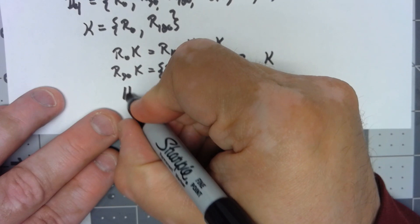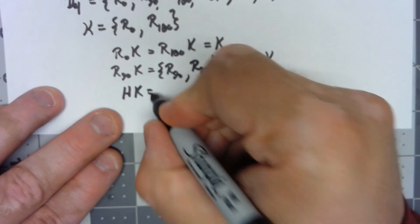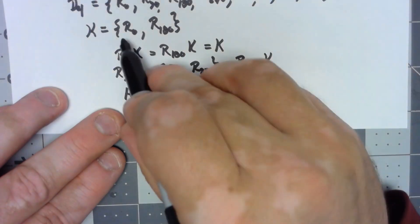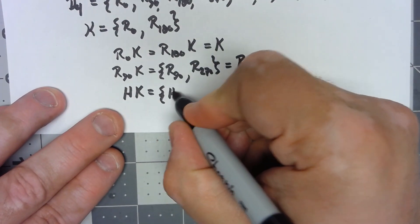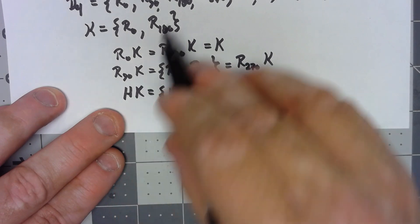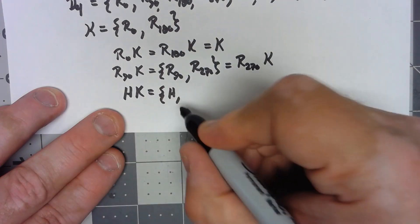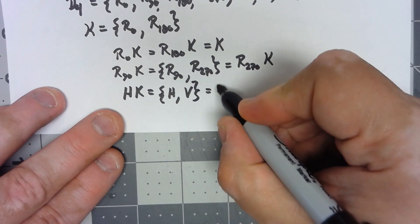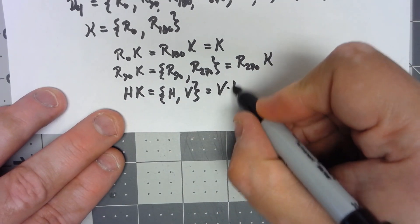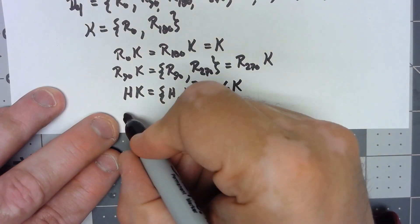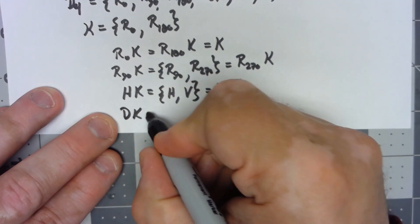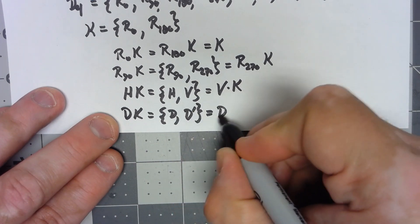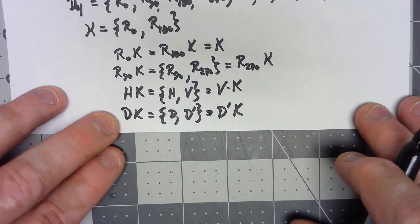If I look at HK, it's a little bit tougher, but H times R0 gives us H, and H times R180 gives us V. And that's going to be the same thing as V times K. D times K is going to give us D and D prime, which is going to be the same as D prime times K.